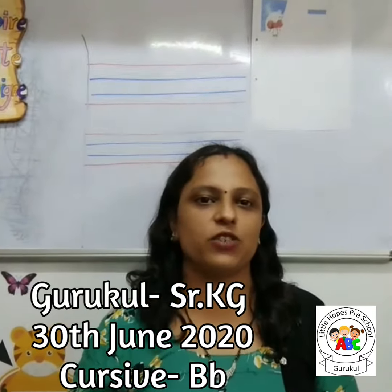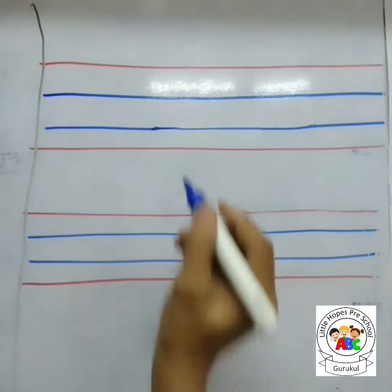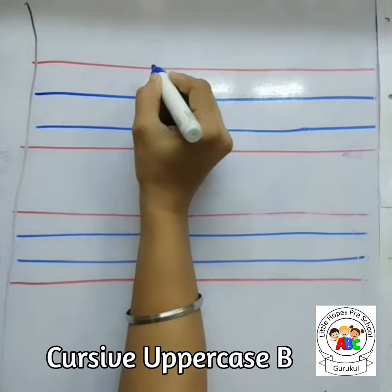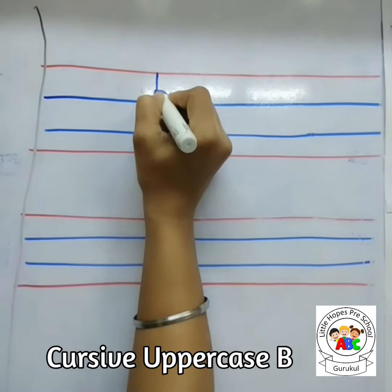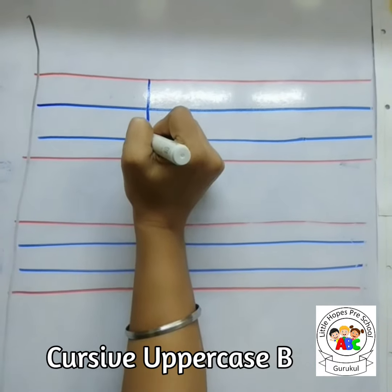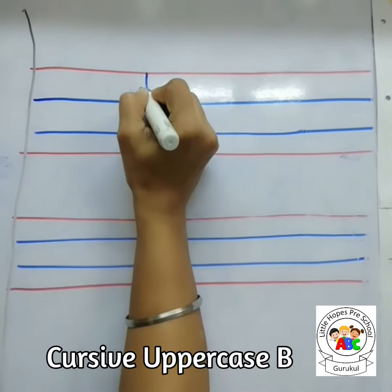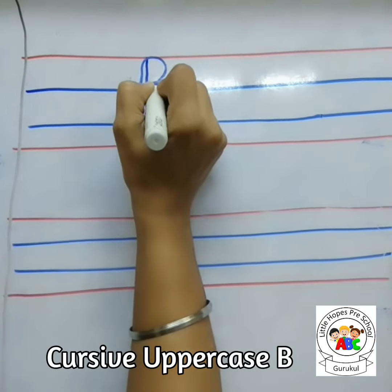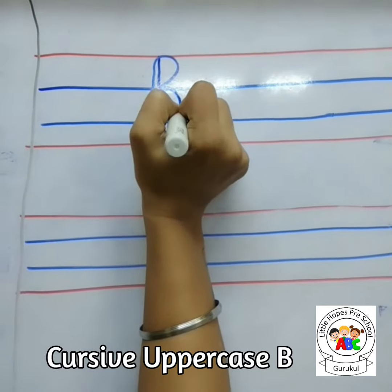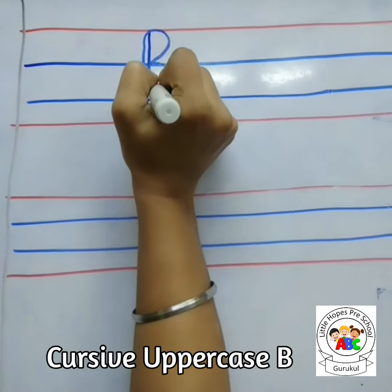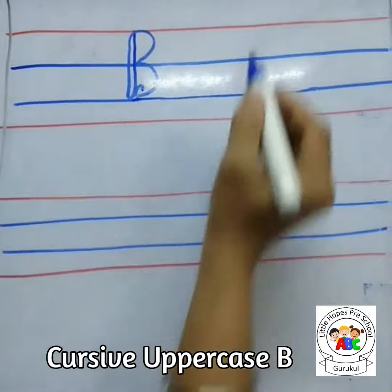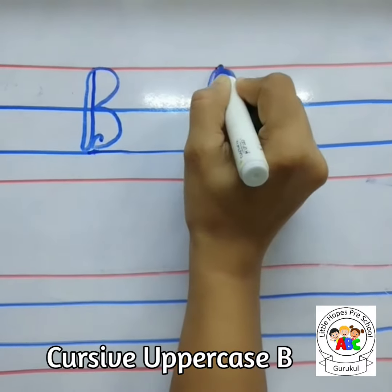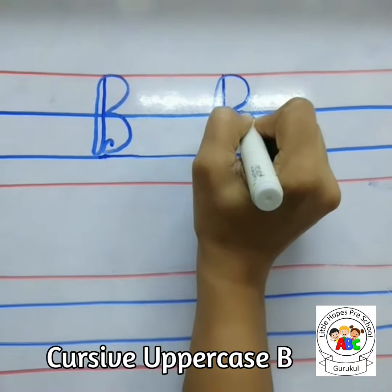I will just write and show you. I am going to write capital B. So capital B we are going to start from the red line. We are going to put one standing line, a small curve, go back to the red line, then we are going to write one curve and a second curve. This is our capital cursive B.